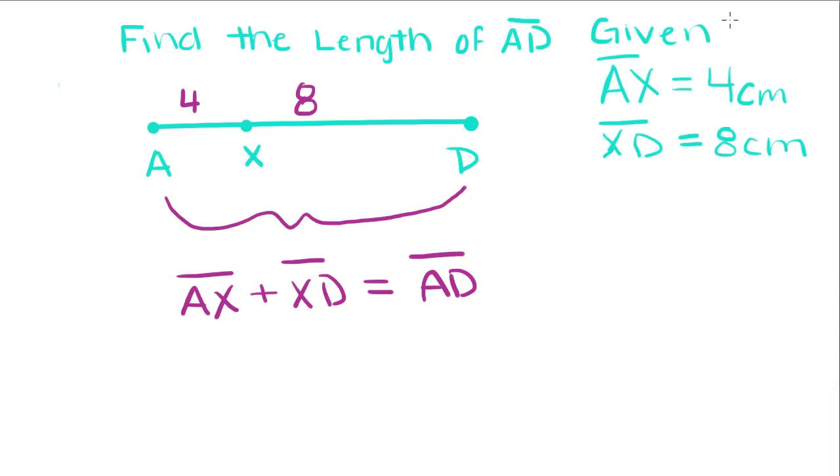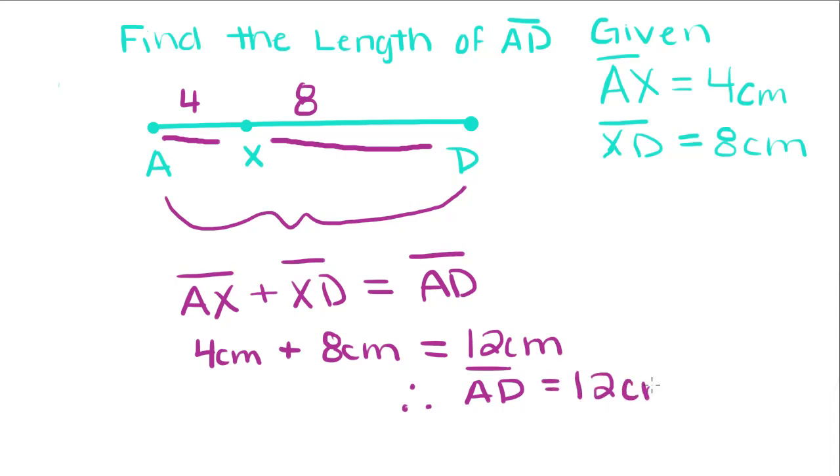And this is called the addition property of segments. And it allows us to take one part of the segment and add it to the other part of the segment to find the whole segment. So all we do is, since we know AX is 4 centimeters, plus XD, which is 8 centimeters, we just add those together, and you get 12 centimeters. Therefore, AD, the length of AD is equal to 12 centimeters.